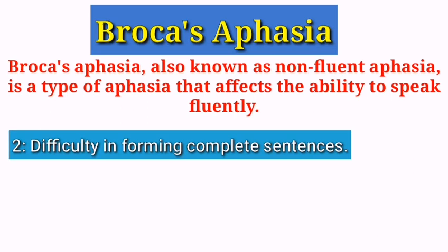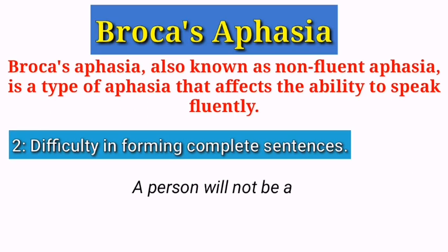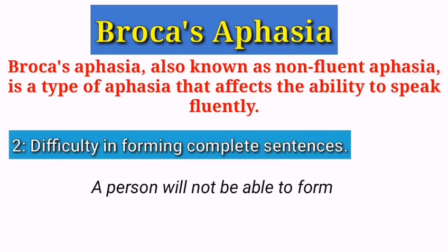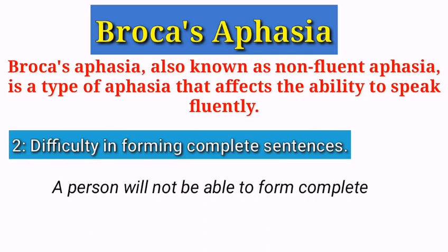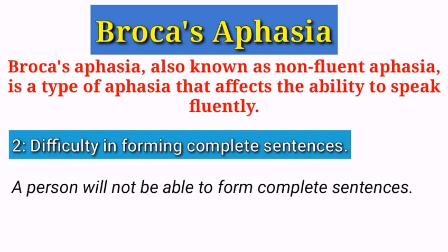Difficulty in forming complete sentences is a common symptom of Broca's aphasia because damage to Broca's area affects the ability to plan and produce sentences.